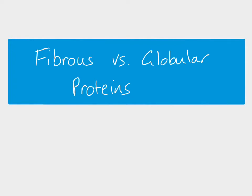In this video we are comparing fibrous and globular proteins. I'm going to use examples of collagen, which is a fibrous protein, and haemoglobin, which is a globular protein, to compare them.